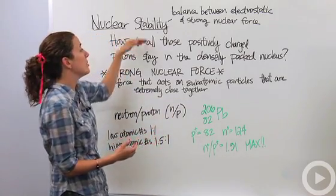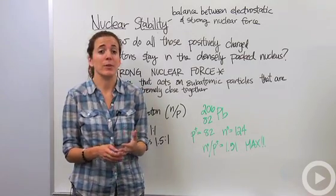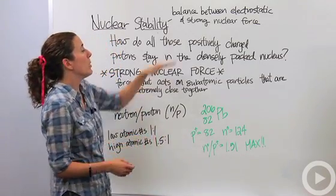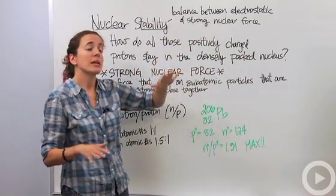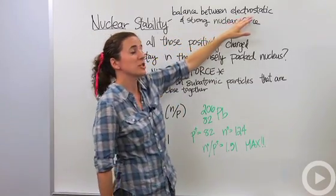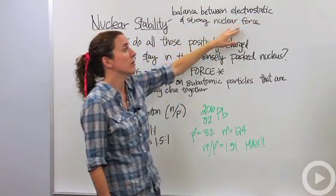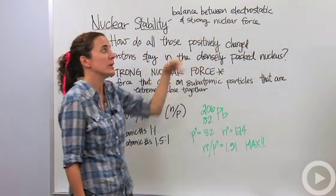We're going to talk about nuclear stability and what makes something stable and what makes something in a nucleus unstable. There's a slight balance between the electrostatic charges within the nucleus and the strong nuclear force within the nucleus, and we'll get to what that means in just a second.